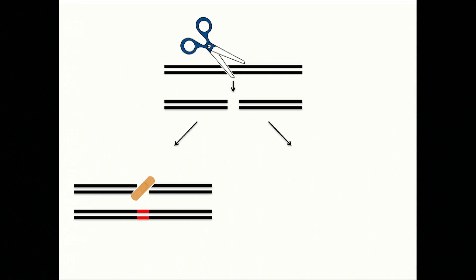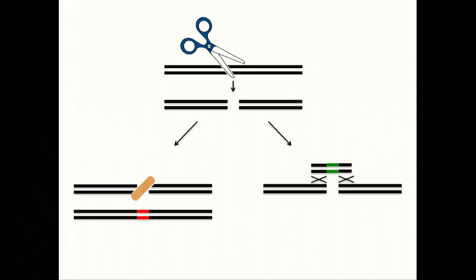The other common method is called homology-directed repair, or HDR — more like a molecular cut-and-paste mechanism. Cells take cues from extra strands of DNA that scientists provide as part of the experiment. These strands serve as a template for what sequences should be put into the broken site. Through this process, we're actually able to insert new genetic material — as simple as one new nucleotide, or an entire new gene — at those particular sites.